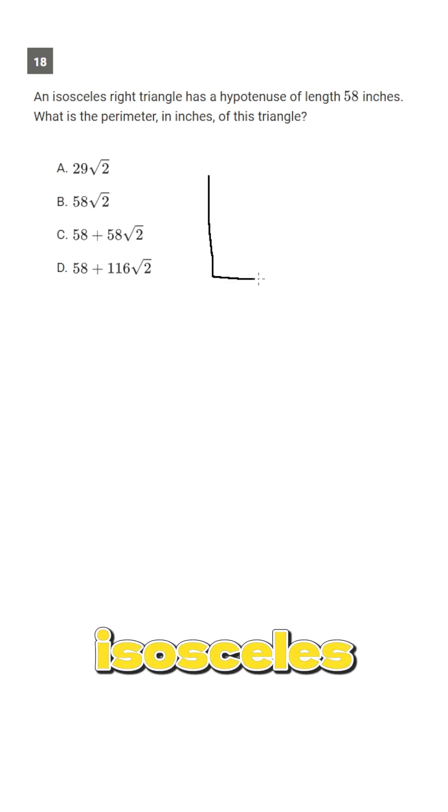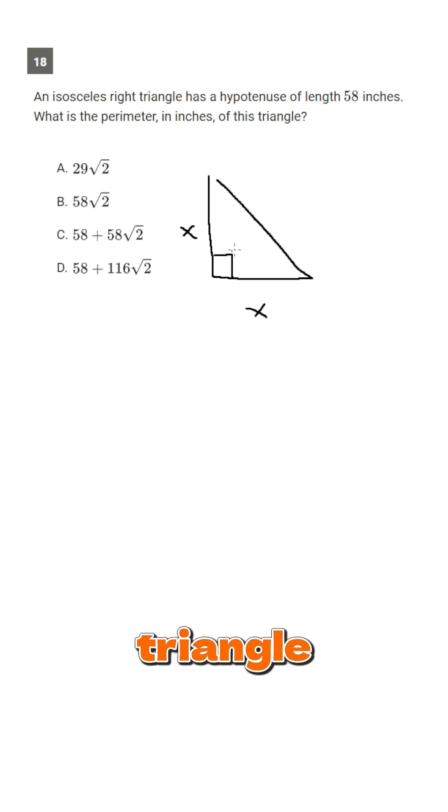So we have an isosceles right triangle. What that means is that these two sides are the same, and so if we have a right triangle where two of the sides are the same, it is a 45-45-90 triangle. So this side would then be x root 2.